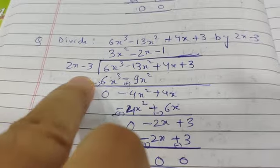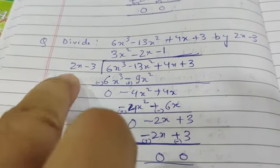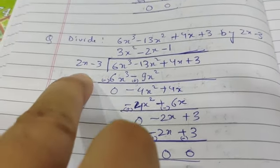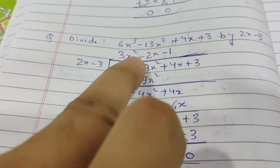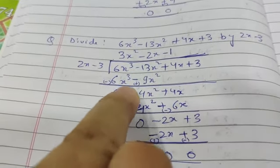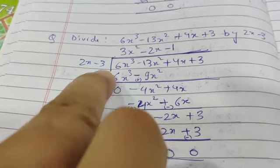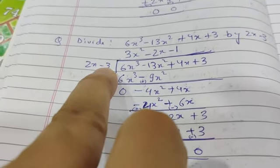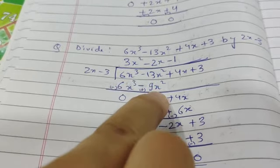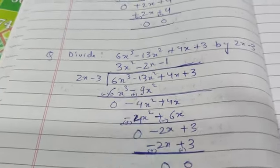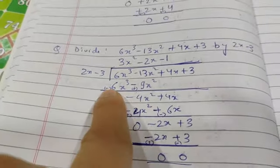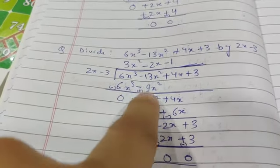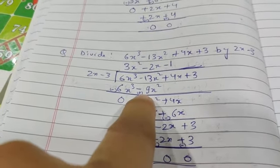Our target is 6x cubed. We have 2x, so if we multiply by 3x squared, 2x times 3x squared equals 6x cubed. Then 3x squared times minus 3 equals minus 9x squared. Sign change and subtract: minus 13x squared minus 9x squared becomes minus 4x squared.